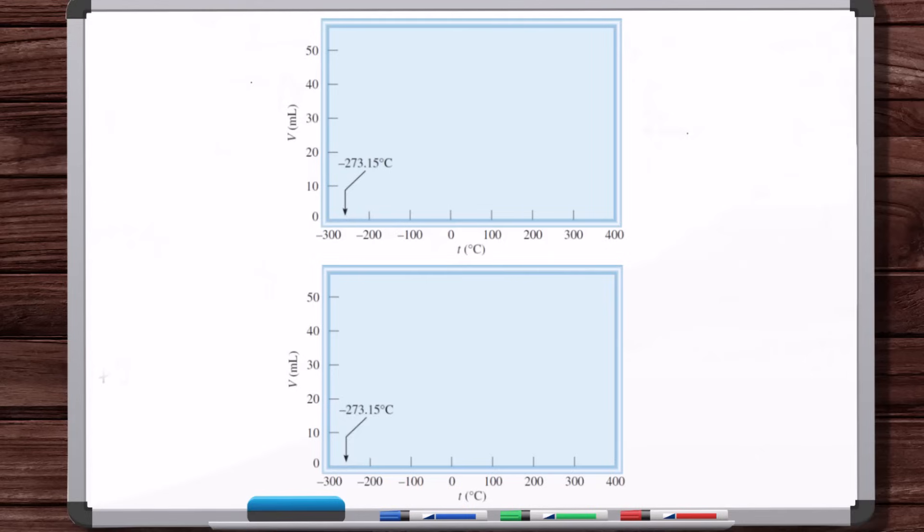Or fix the amount of gas, so fix the number of moles of gas, hold the pressure constant, and see what happens to the volume of the gas as the temperature changes. It was through that specific kind of test that absolute zero, and thus the absolute temperature scale, was discovered. So the amount of gas is constant, pressure is held constant, but the temperature is being varied, and you're seeing what happens to the volume of the gas. So imagine we've got two separate gases, two separate types of gases.